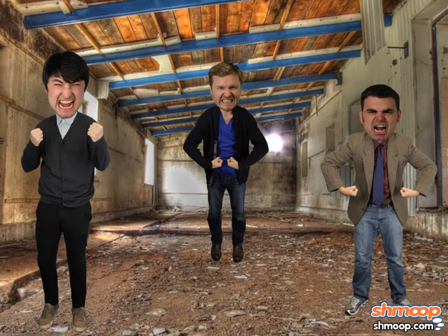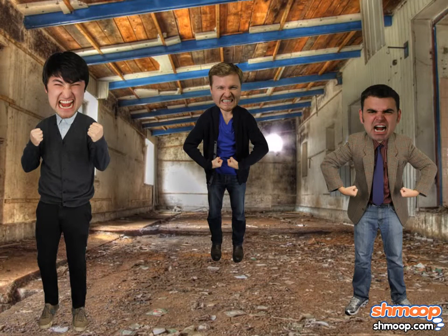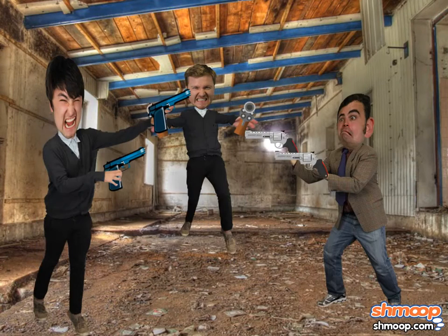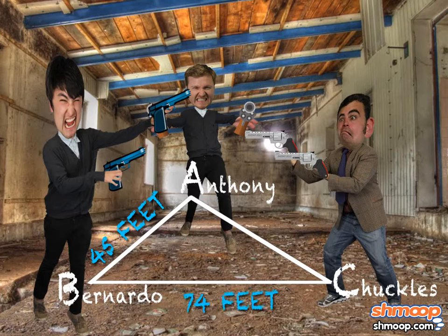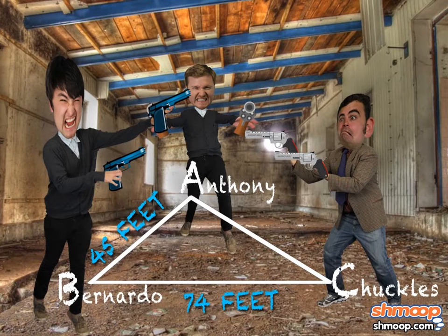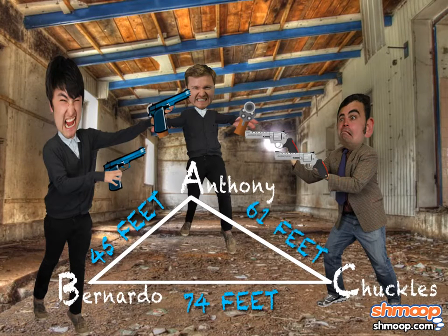They all ended up in the same place at the same time, and next thing they knew, they were trapped in a brutal standoff. There is 45 feet between Anthony and Bernardo, 74 feet between Bernardo and Chuckles, and 61 feet between Chuckles and Anthony. What are the angles between each?